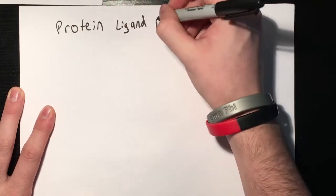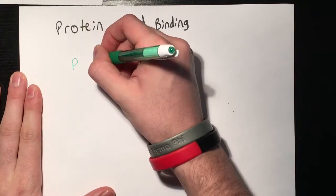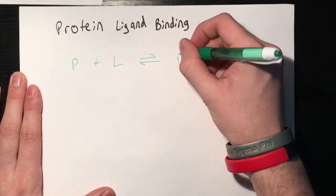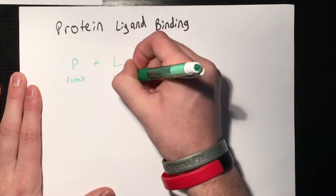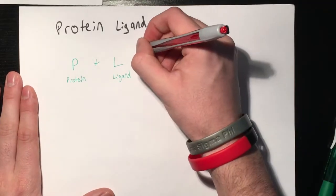So for proteins in general, you have your protein, which is labeled as P, which binds to your ligand L in a specific binding site. And this forms your PL complex, which is just your protein bound to your ligand.